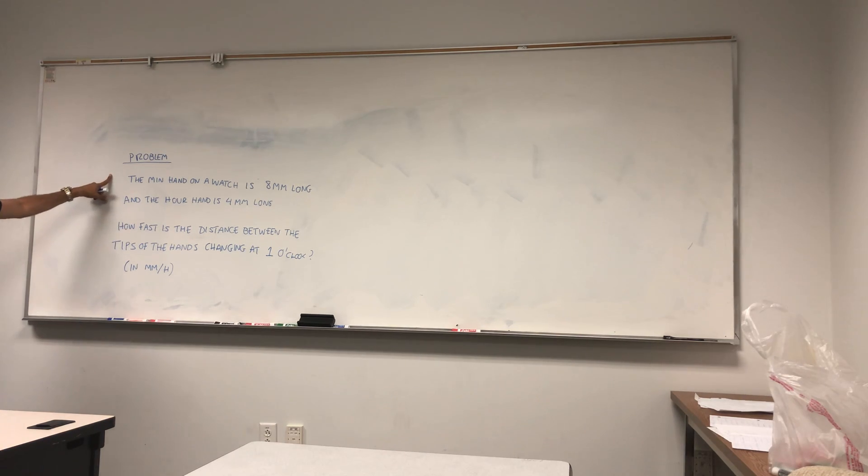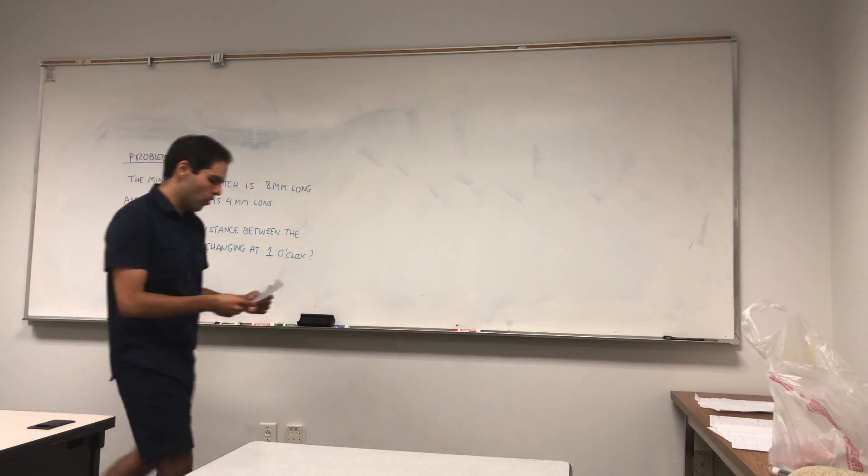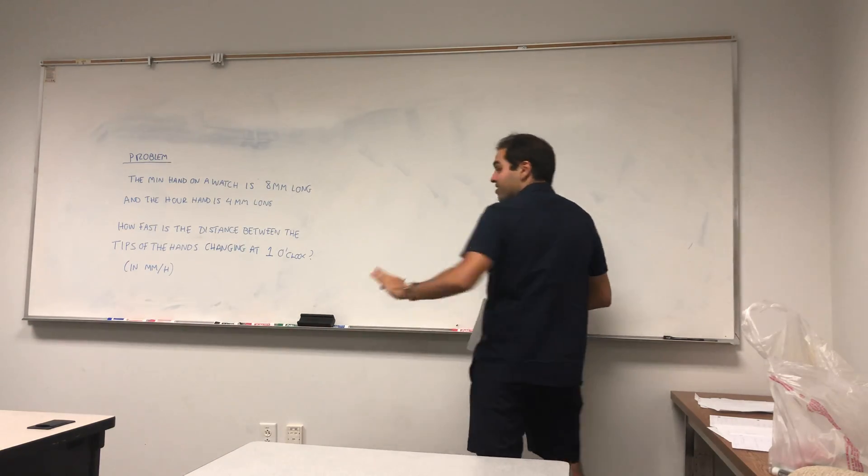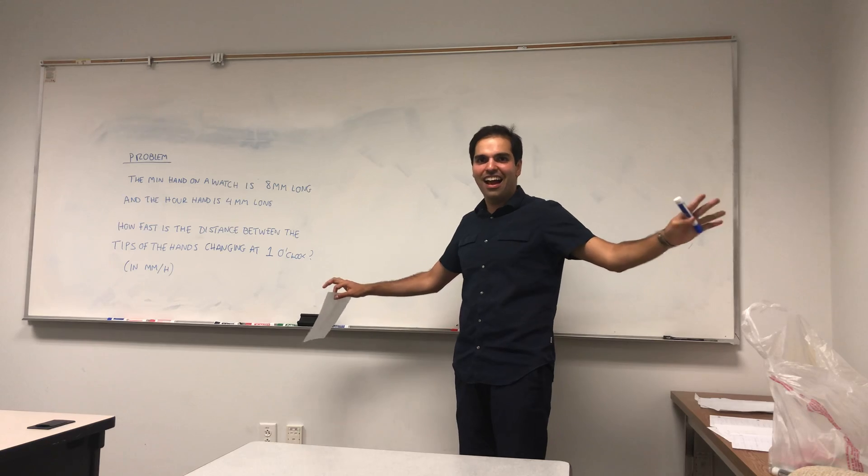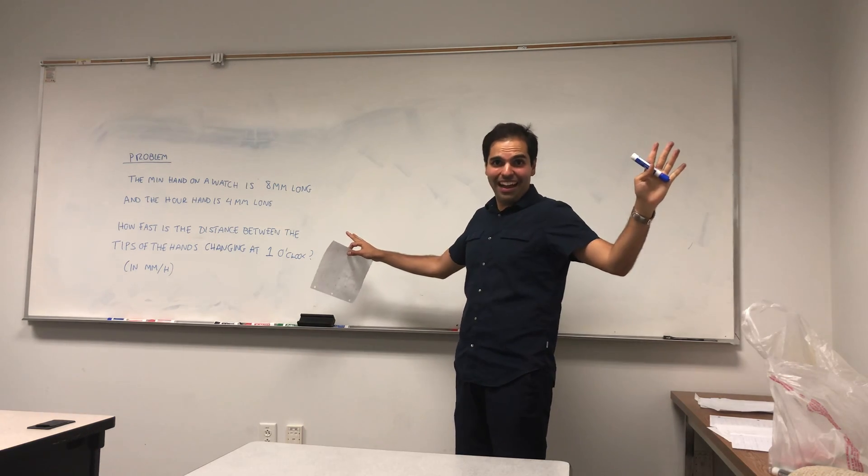So what is the problem saying? Let me read that first. It says the minute hand on a watch is 8 millimeters long and the hour hand is 4 millimeters long, and the question is how fast is the distance between the tips of the hands changing at 1 o'clock? Assume for example in millimeters per hour. And again this is a related rates problem, not a physics problem, so I don't want you to ask is this physically plausible.